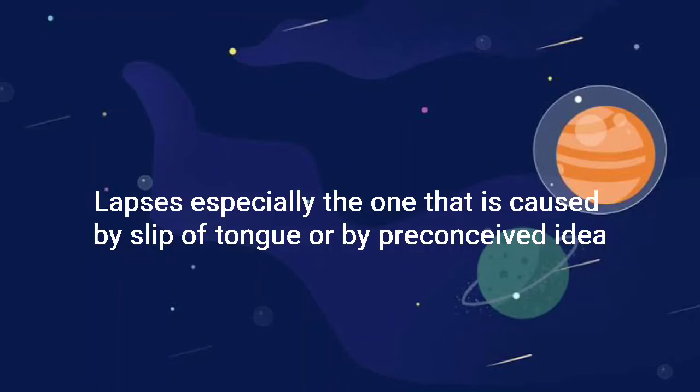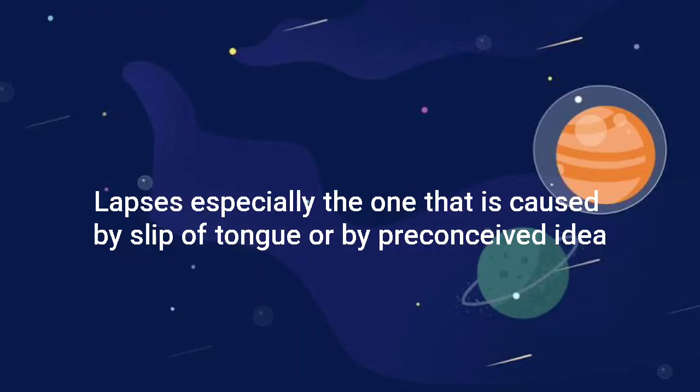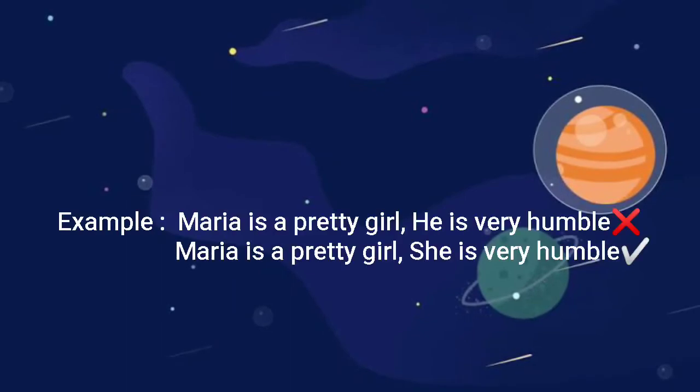Lapses — especially the one that is caused by a slip of tongue or by a preconceived idea. The example for lapses is: 'Maria is a pretty girl. He is very humble.' The sentence is incorrect. The correct sentence is: 'Maria is a pretty girl. She is very humble.'